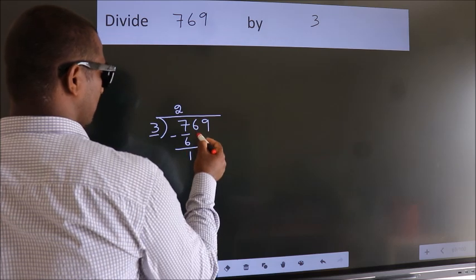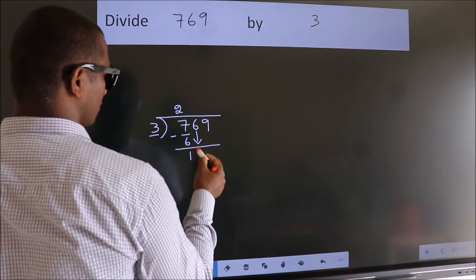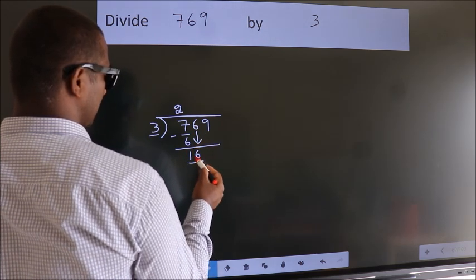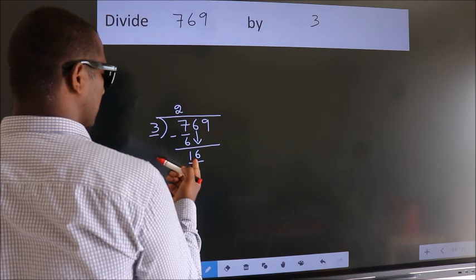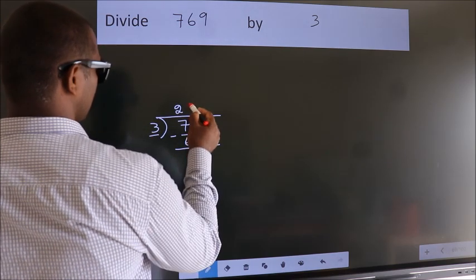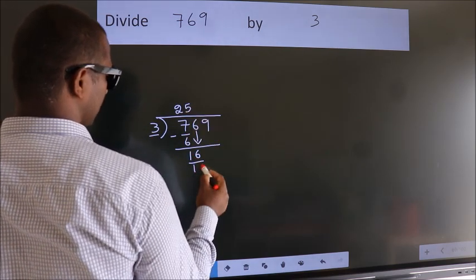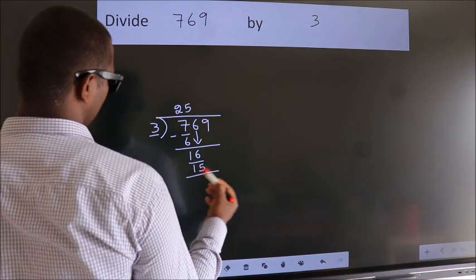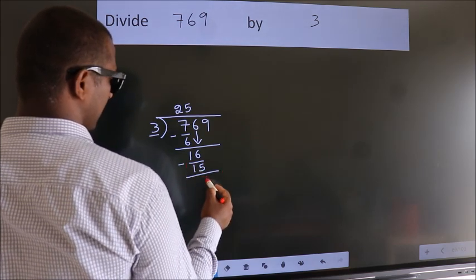After this, bring down the next number. So 6 down, so 16. A number close to 16 in the 3 table is 3 times 5 equals 15. Now we subtract. We get 1.